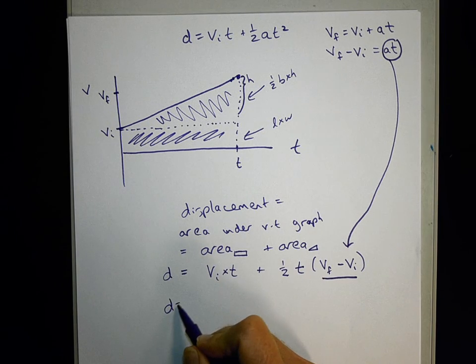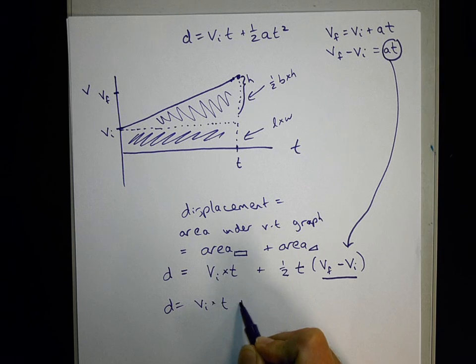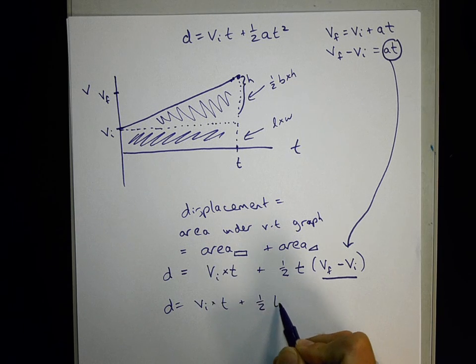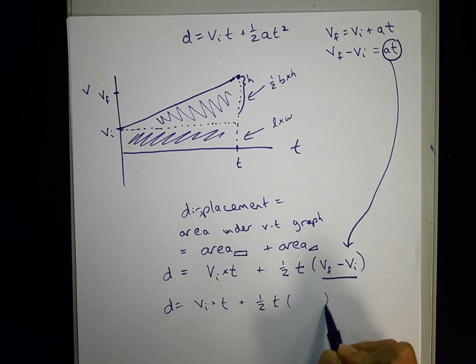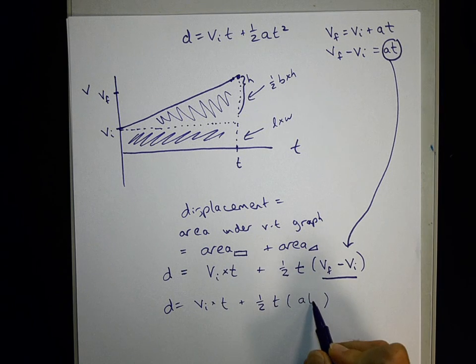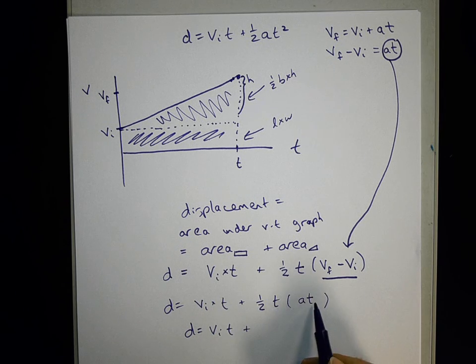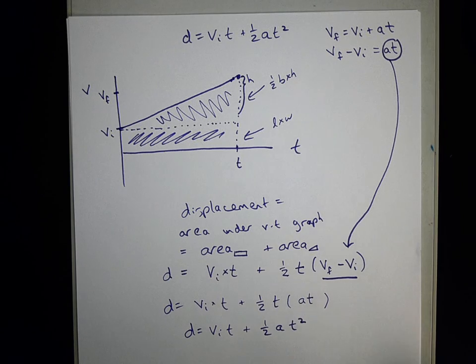Let's keep everything the same except this underlined part. v_i is still there, t is still there, 1/2 is still there, this t is still there. But those parentheses instead of v_f minus v_i, now they're a*t. If I just rearrange the algebra, this t and this t make a square, so we write 1/2 a*t squared. And now I've derived the original expression at the top.